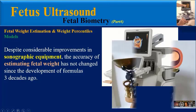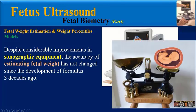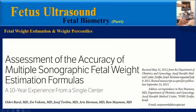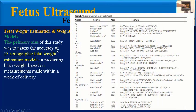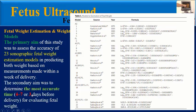The accuracy of estimating fetal weight has not changed since the development of formulas three decades ago. This paper published in 2012 assessed the accuracy of multiple sonographic fetal weight estimation formulas in a retrospective cohort study over 10 years. The primary aim was to assess the accuracy of 23 sonographic fetal weight estimation models in predicting birth weight based on measurements made within one week of delivery.